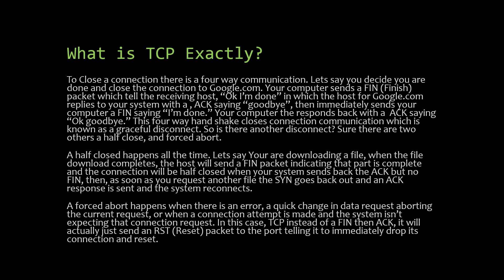There are two other disconnect types: half close and forced abort. A half close happens all the time — for example, when a file download completes, the host sends a FIN packet indicating that part is complete and the connection is half closed. When your system sends back an ACK but no FIN, then as soon as you request another file, the SYN goes back out, the ACK response is sent, and the system reconnects.